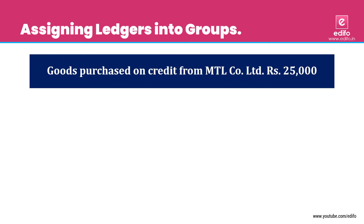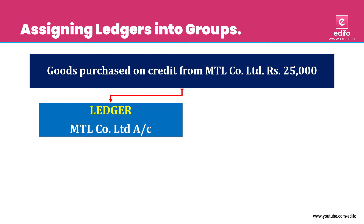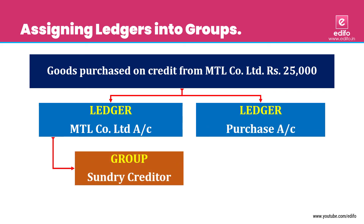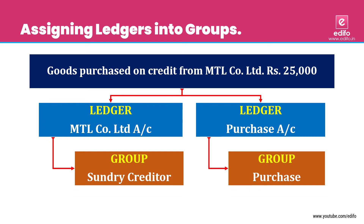Next transaction: goods purchased on credit from MTL Company Limited. The purchase is on credit, so there is no cash transaction. Instead of cash, replace with a personal account — that is MTL Company Limited — and purchase account. MTL Company Limited is a 'Sundry Creditor' because we owe money to them. Purchase account belongs to the 'Purchase' group.